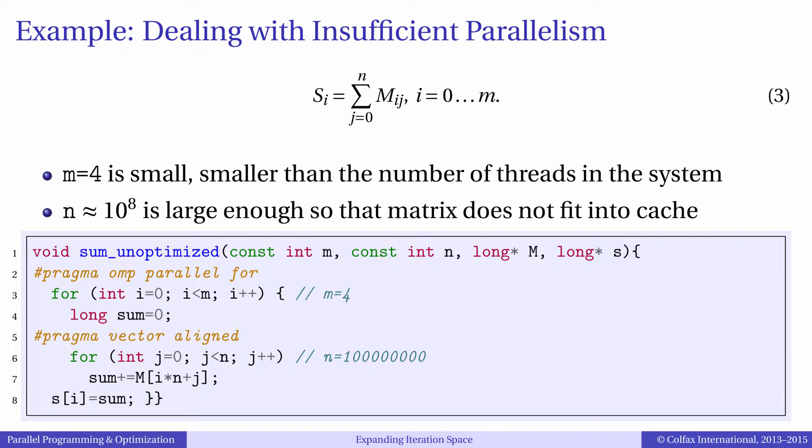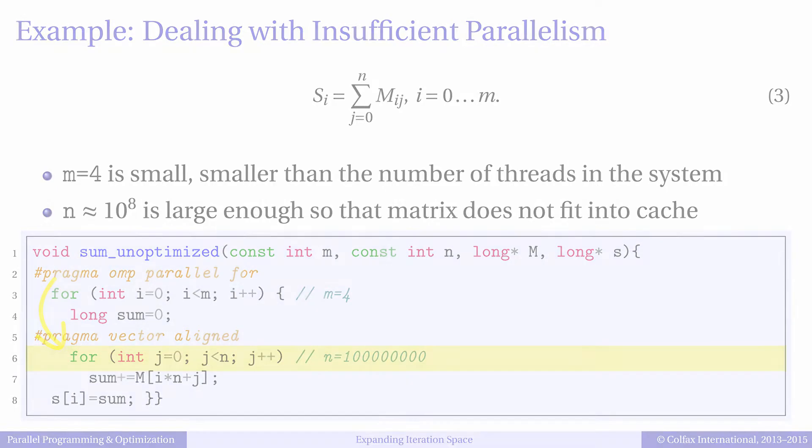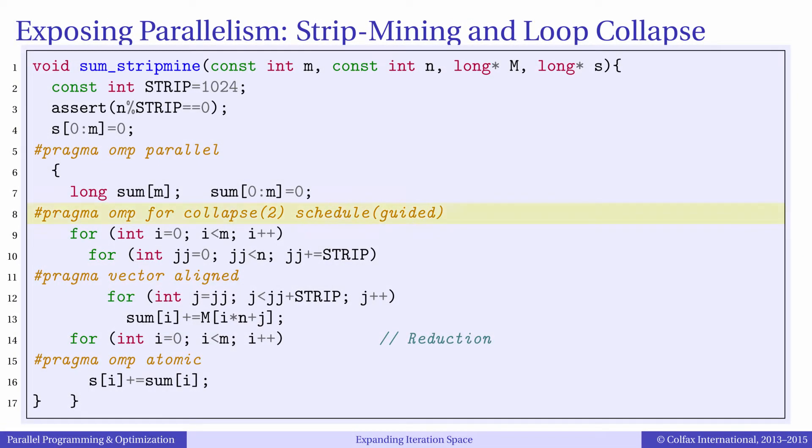For example, because the inner loop has a lot of iterations, we could try to move the OpenMP pragma down to the inner loop. Alternatively, we could try to collapse loops without strip mining the loop in j.